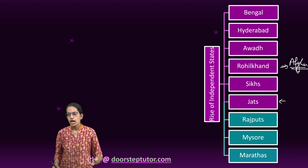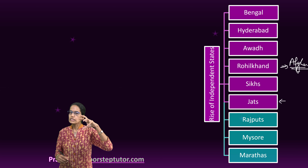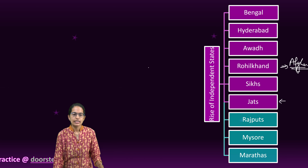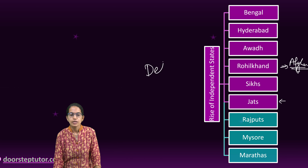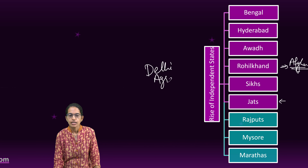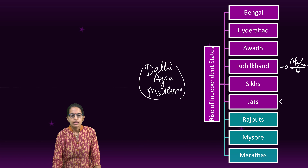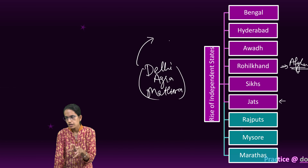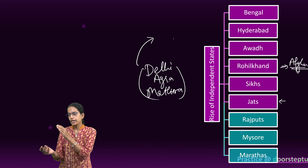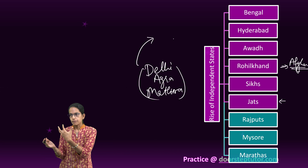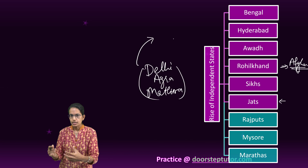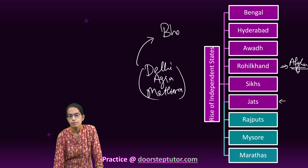The Jhat was a region where an independent state developed in the regions of Delhi, Agra and Mathura — the proximity regions of Delhi. There were many people who worked together and Bharatpur became their capital.